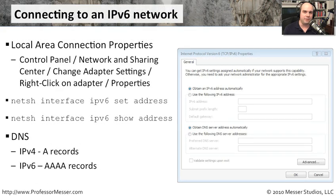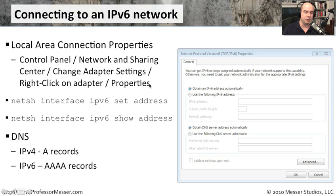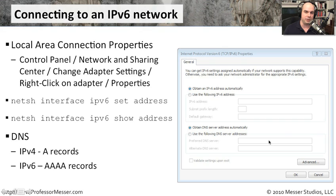If you've configured IPv4, look at our previous video on configuring IPv4 — the process is almost identical. We go to our local area connection properties, found in the control panel under Network and Sharing Center. Change adapter settings, right-click on an adapter and choose properties. You'll find IPv4 and IPv6 properties there, including the Internet Protocol version 6 property screen for manually configuring the IPv6 address and DNS server address.